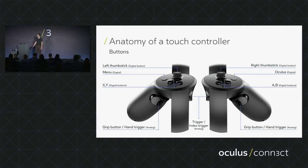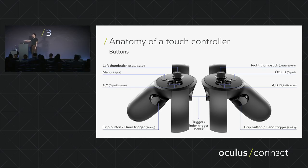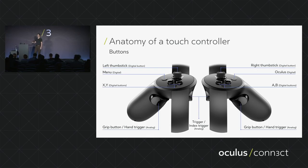First, touch controllers. Here we have a picture of a touch controller showing the button inputs and trigger inputs — thumbsticks, triggers, and buttons. Digital buttons are on-off, while analog buttons have a range from zero to one. Our triggers are analog and the A, B, X, Y buttons are on-off. At the bottom there's a grip trigger, which our API has called the hand trigger, but Oculus has decided to rename it as a grip button. Similarly, the index trigger is being renamed to trigger.